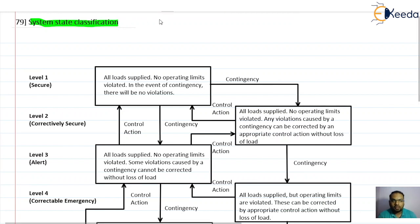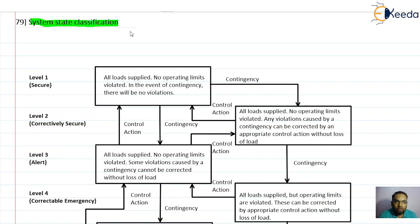We know that previously we discussed a power system operating normally. When subjected to a contingency, that contingency may cause some equipment to operate with overloading. If that overloading continues for some time, it may cause that particular equipment to get damaged or it may result in a system blackout. So the levels that a system follows after contingencies are introduced — depending upon those levels, we have the system state classification.